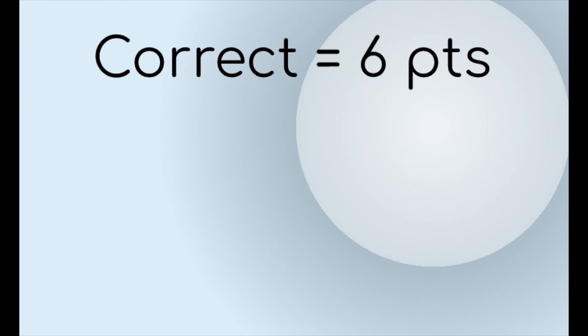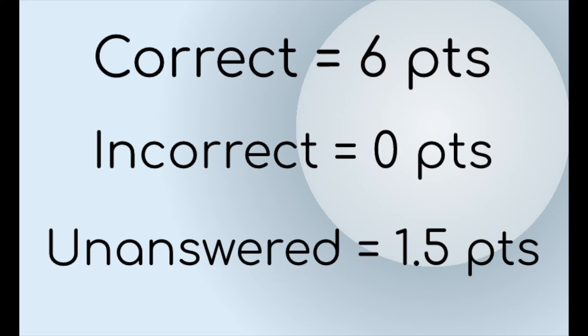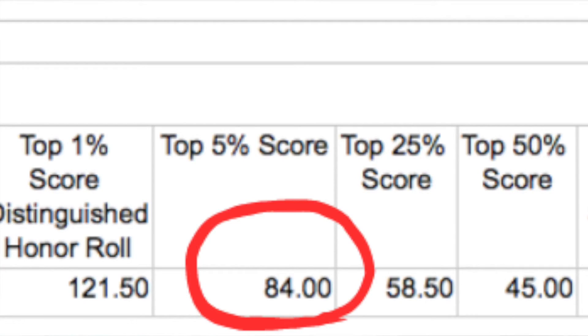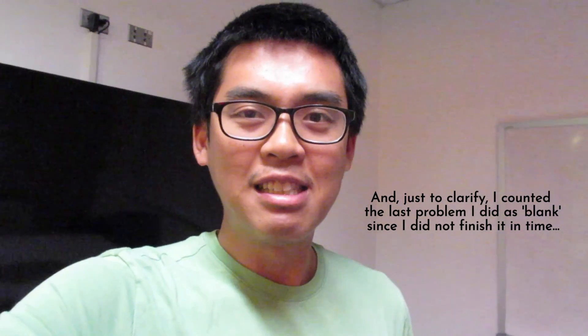All right, let me add up the score and tell you how I did on this exam. For the AMC 12 scoring system: for each problem you get correct, you get 6 points; for each problem incorrect, you get 0 points; for each problem left blank, you get 1.5 points. To qualify for the next round — AIME — you need 84 points, which puts you in the top 5%. I got 12 problems correctly, 4 problems incorrectly, and 9 blanks, which sums to 85.5 — so I barely made it to the next round. Literally, if I got one more problem incorrect I wouldn't have made it. So there you have it — I can do high school math. If you have any questions or requests for what video you want me to do next, please leave a comment down below. Thank you for watching, peace.